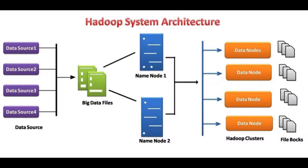Distinct files are divided into fixed-size blocks that are kept on machines throughout the cluster. Files made up of many blocks usually do not have all of their blocks stored on a single machine. HDFS ensures reliability by replicating blocks and distributing the replicas across the cluster. The default replication factor is three, meaning every block occurs three times on the cluster. Block-level replication allows data availability even when machines fail.